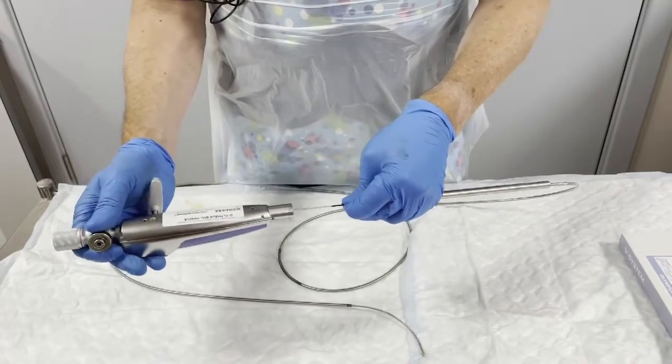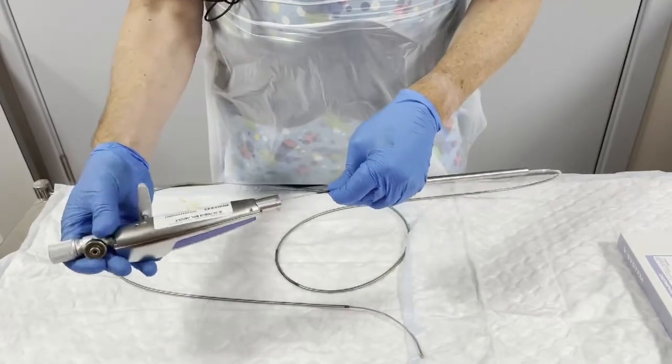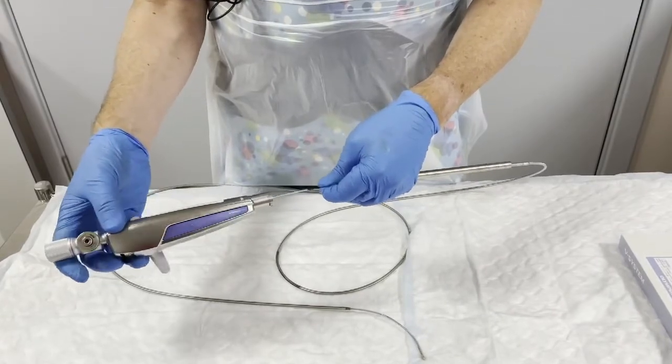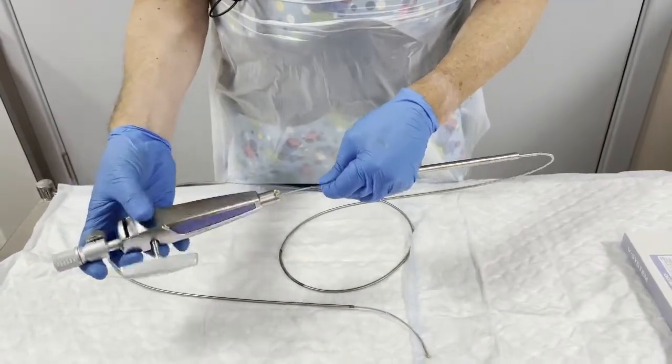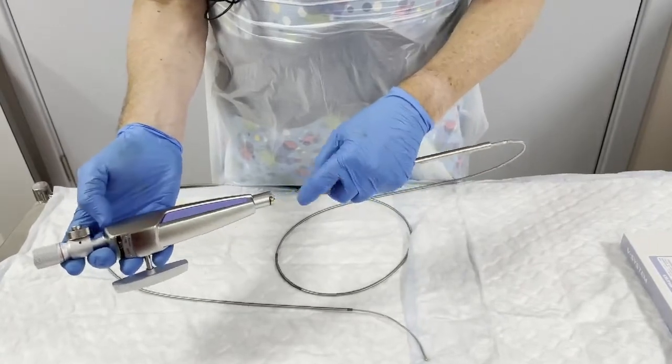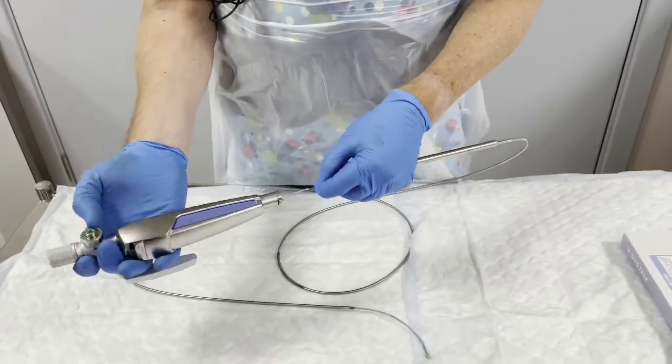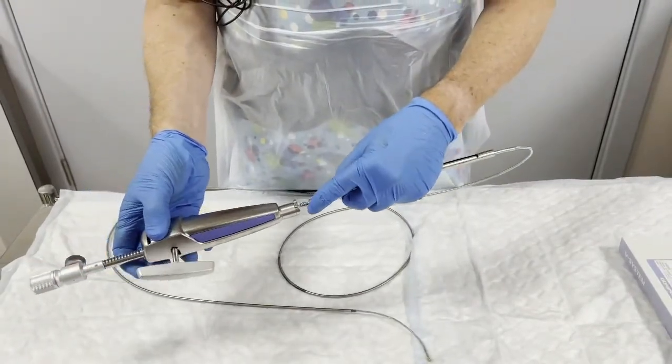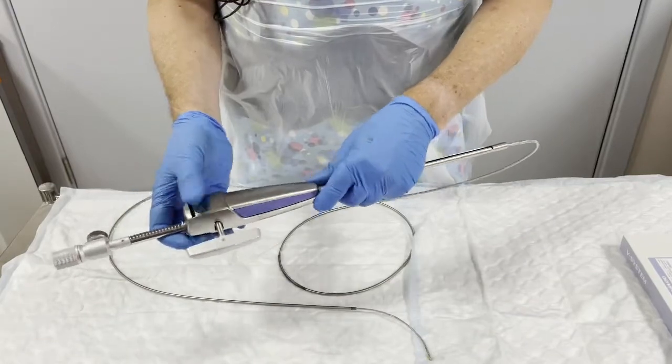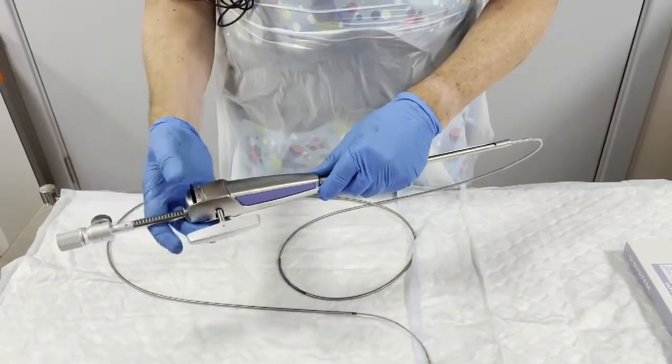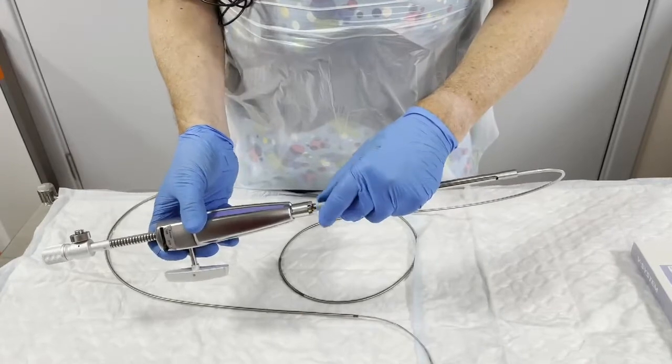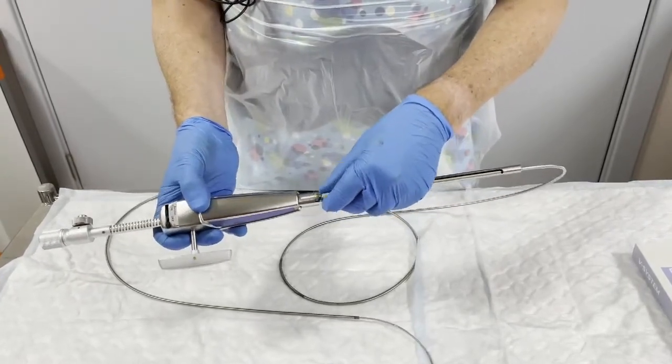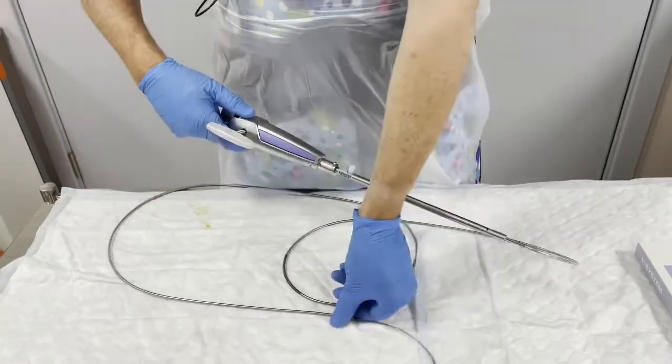If you don't do that, a mistake that people make is that the tip of the catheter is not secured in this lock, and then this is connected too early. But we're happy that that is now locked in there, and so we then lock the lithotriptor into the handle.